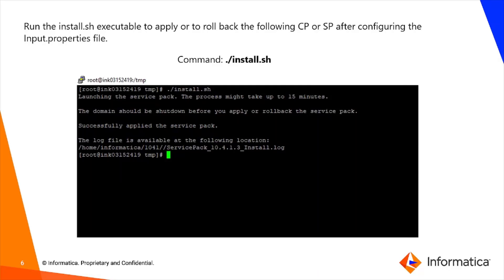After configuring the input.properties file, we are ready to install the CP or SP. We run the command: ./install.sh. The installation starts and may take some time depending on workstation performance.